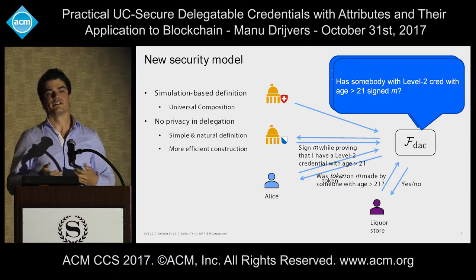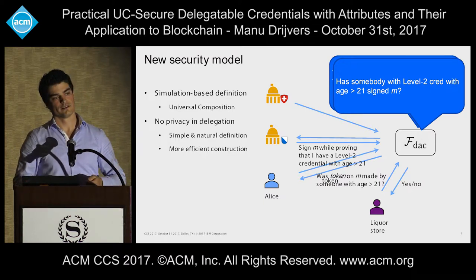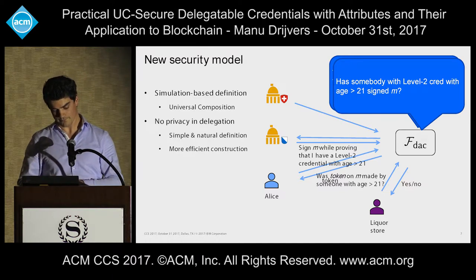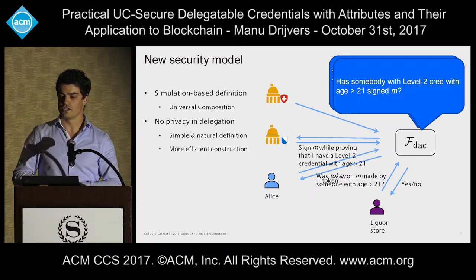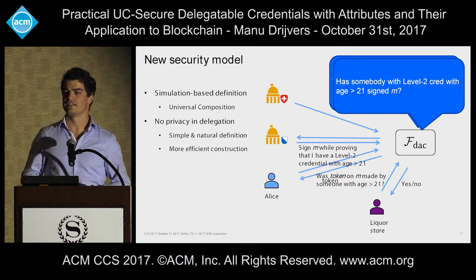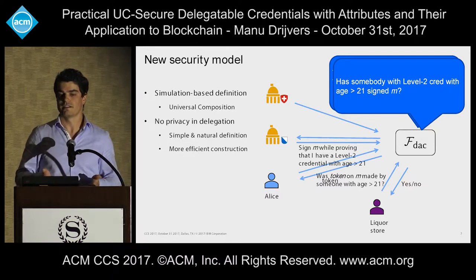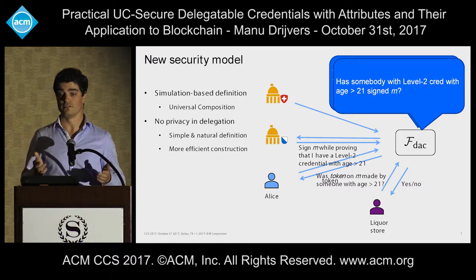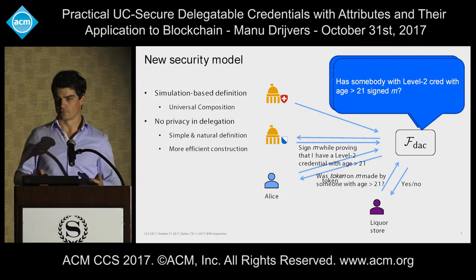In one sense we have a stronger security definition than prior work, but in another sense we take a shortcut. Existing security definitions for delegatable anonymous credentials considered privacy in delegation — if Alice delegates a credential to Bob, they might not know each other's identity but might know each other by pseudonyms. This is a very strong and flexible definition, but it's also very hard to achieve, which is one of the reasons existing solutions are not efficient. We actually think it's not very important to have this property, because in the vast majority of practical use cases you would typically know to whom you're giving a credential. So from our security definition we omit privacy during delegation and just assume the parties are allowed to know each other. This allows for a very simple definition of security and opens the door for much more efficient instantiations.